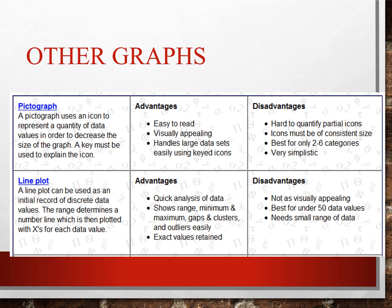Other graphs we could utilize include a pictograph, which uses an icon to represent a quantity of data values in order to decrease the size of the graph — a key must be used to explain the icon. There are advantages and disadvantages to consider. A line plot can be used as an initial record of discrete data values; the range determines a number line which is then plotted with x's for each data value.